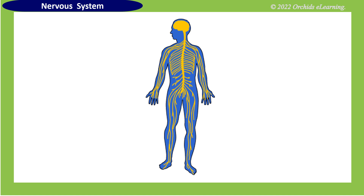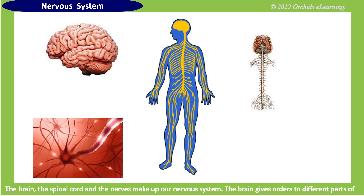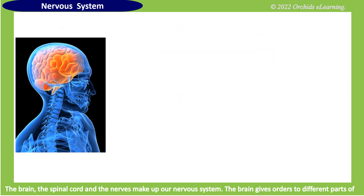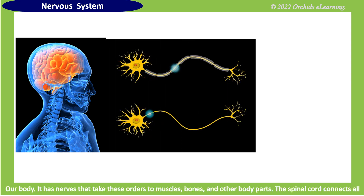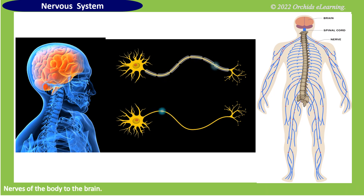Nervous system: the brain, the spinal cord, and the nerves make up our nervous system. The brain gives orders to different parts of our body. It has nerves that take these orders to muscles, bones, and other body parts. The spinal cord connects all nerves of the body to the brain.